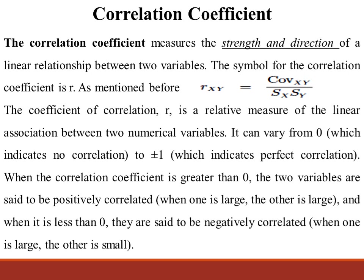The correlation coefficient measures the strength and the direction of a linear relationship between two variables. The symbol for the correlation coefficient is r. It is a relative measure of the linear association between two numerical variables. It can vary from 0, which indicates no correlation, to plus or minus 1, which indicates perfect correlation.